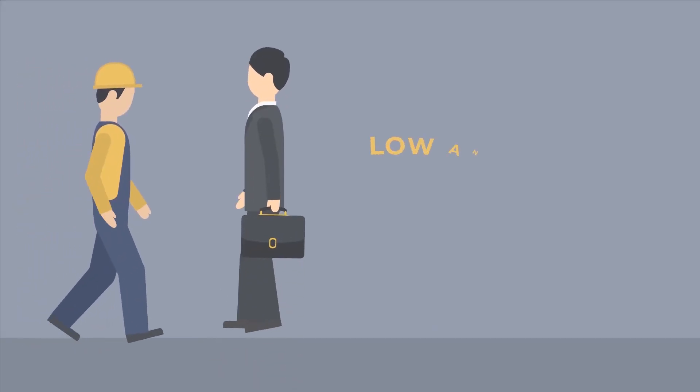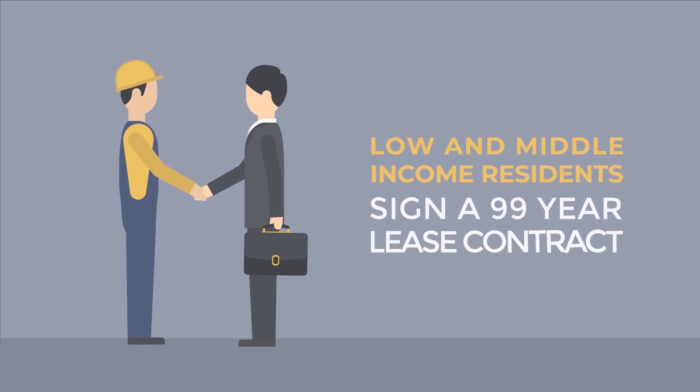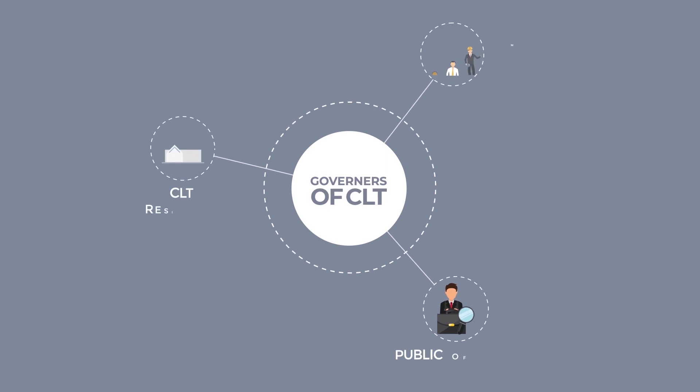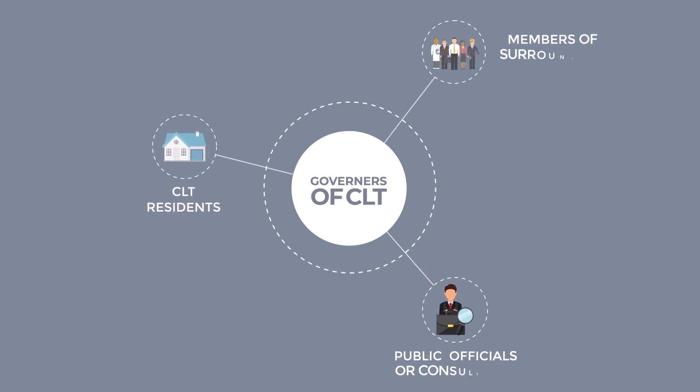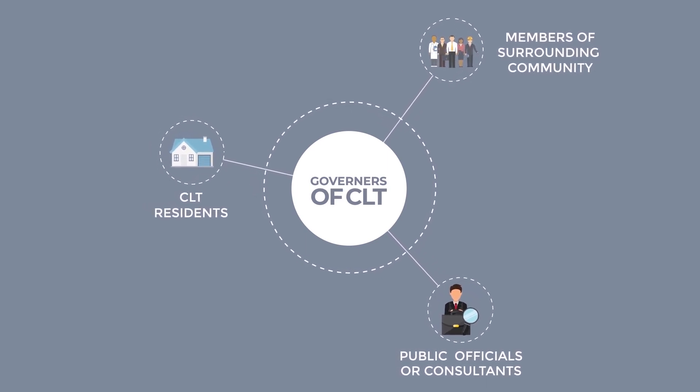Low and middle income residents sign a 99-year lease contract and agree that if they decide to sell the home, they would do so at a pre-calculated affordable rate. The community land trust nonprofit organization activities are governed by a three-part board.